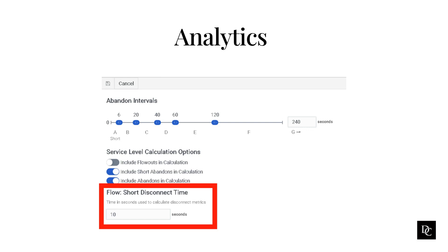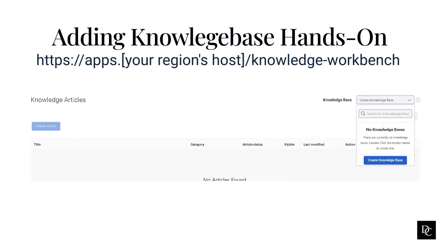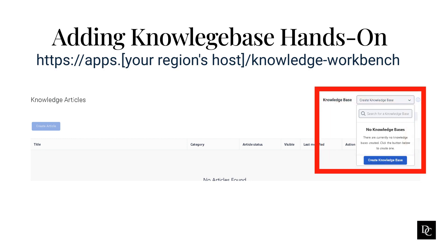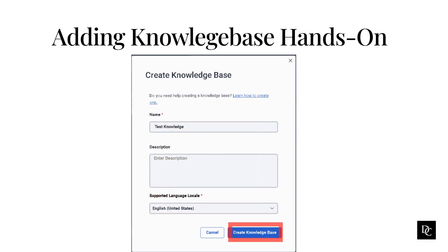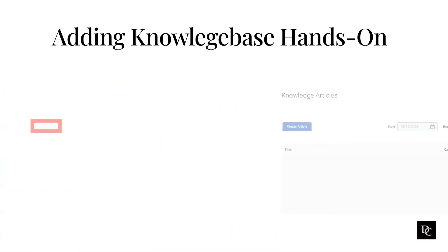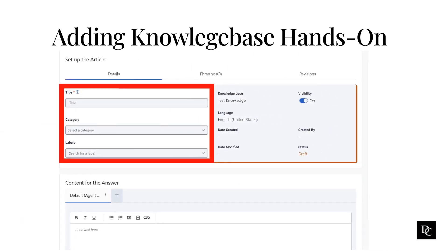In order to set a default panel manager for Agent Assist, we need to create an assistant and knowledge base. We will first start by creating a knowledge base. Access to the Knowledge Workbench homepage varies by region — enter the URL replacing your region's host with the appropriate Genesis Cloud region. You will notice that the Create Article button is grayed out due to a knowledge base needing to be created. Click Create Knowledge Base. The Create a new knowledge base page opens — add a name, language, and description for the knowledge base and click Create. The knowledge base opens to the articles page. Now the Create Article button is available — go ahead and click it. Enter the question that a customer might ask, such as what are your hours.